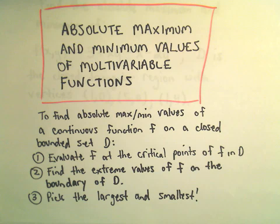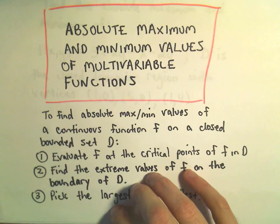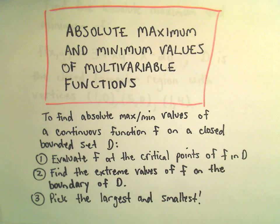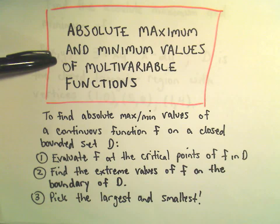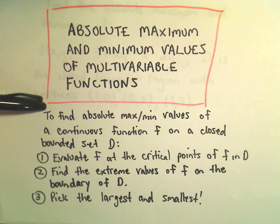In this video I want to talk about finding absolute maximum and minimum values of a multivariable function, specifically with two independent variables x and y. If you remember how to find absolute maximum and minimum values when you have a function in one variable, it's very similar.